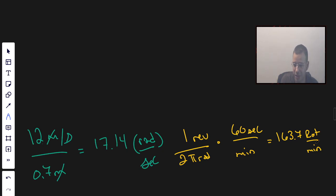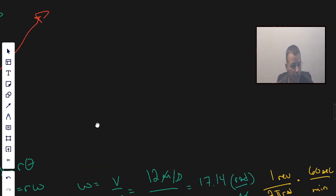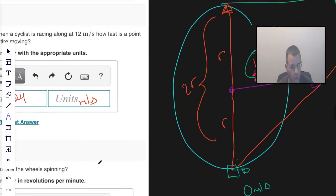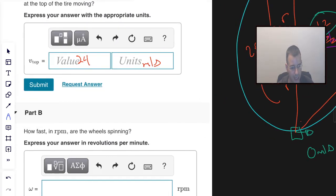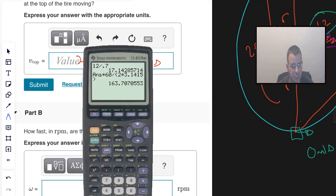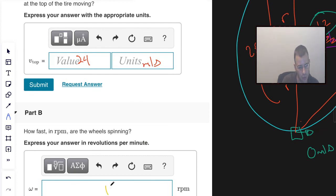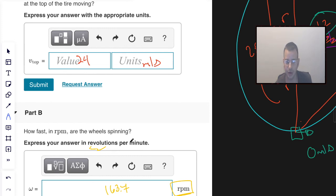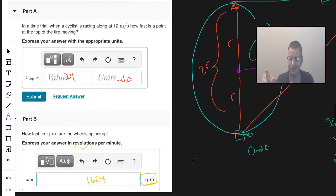Now I said revolutions, they are rotations. Same thing, I'm not going to get caught up in it. So our omega, our angular speed, is 163.7 revolutions per minute. That's how I'd approach that one. Hope it helped. See you next time.